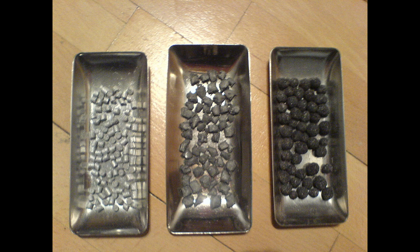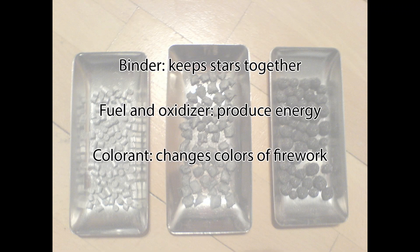The stars in the aerial shell are composed of four elements: a fuel, a colorant, an oxidizing agent, and a binder. The binder keeps the star together and is usually made of some sort of resin. The oxidizer and fuel provide energy in the form of heat for the colorant, and regulate the temperature at which the firework explodes. The colorant, usually a metal salt, changes the color of the firework. A chlorine donor may also be present to intensify the color, although the chlorine donor is often also the oxidizer.